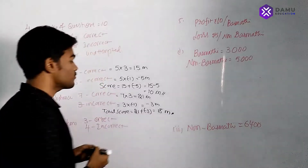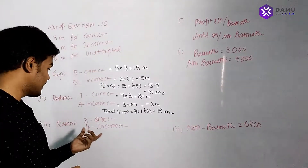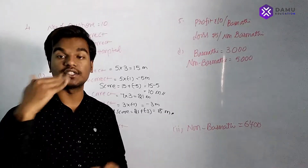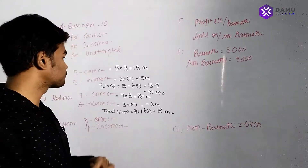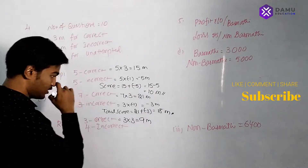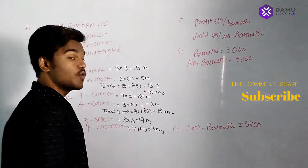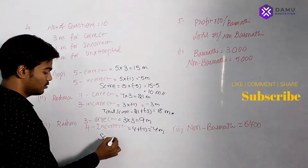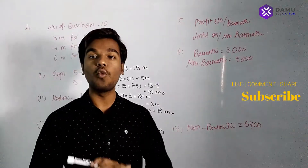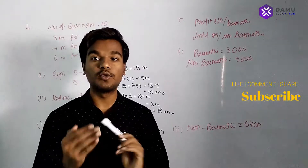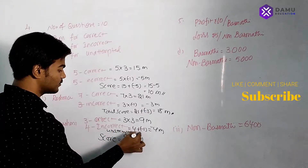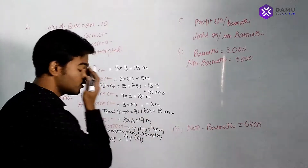Next, Rushme attempted 3 correct answers and 4 incorrect answers out of 7 attempted — she did not attempt the remaining 3 questions. For correct answers: 3 into 3 is 9 marks. For 4 incorrect answers: 4 into minus 1 is minus 4 marks. Rushme's score is 9 plus (minus 4). We also need to include the 3 unattempted questions.